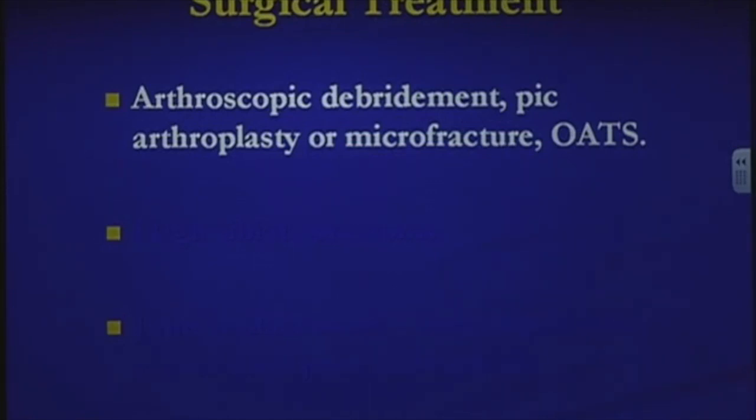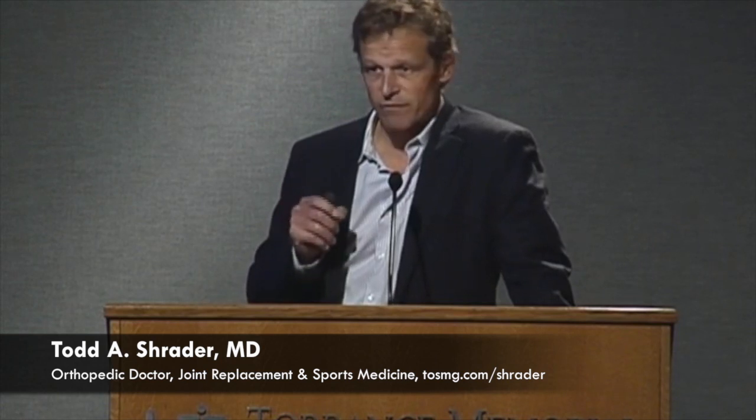Surgical treatments include arthroscopic procedures for early arthritis. Arthroscopic debridement has been shown to be a fairly poor long-term treatment — you can clean up the knee temporarily but it doesn't treat the arthritis itself. Pick arthroplasty or microfracture — you hear about athletes getting this — involves drilling holes into the arthritic bone to stimulate bone marrow to form fibrocartilage, a combination of scar tissue and cartilage cells from stem cells in the marrow. It's a very thin layer without the wear resistance of normal cartilage.